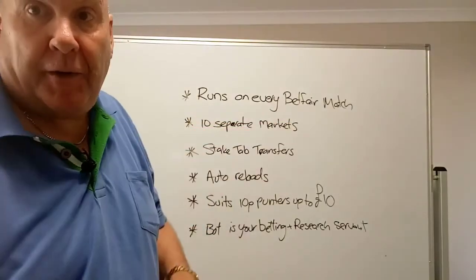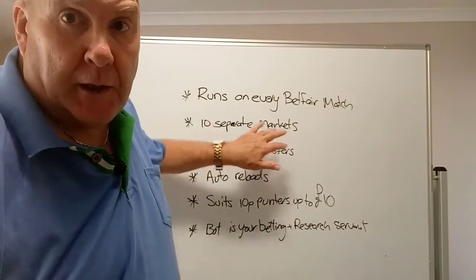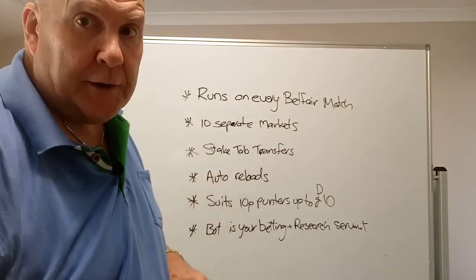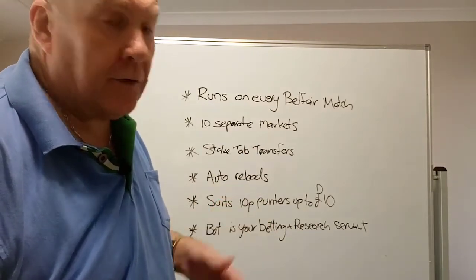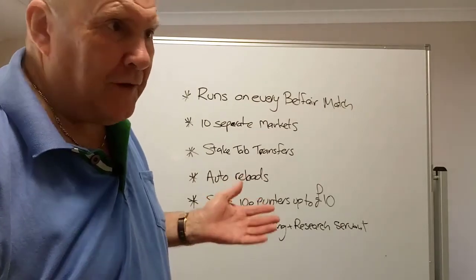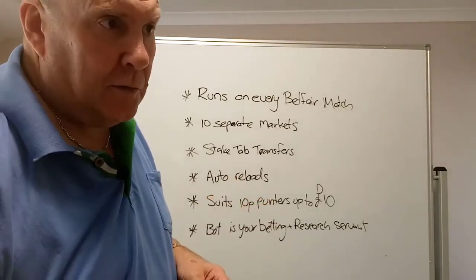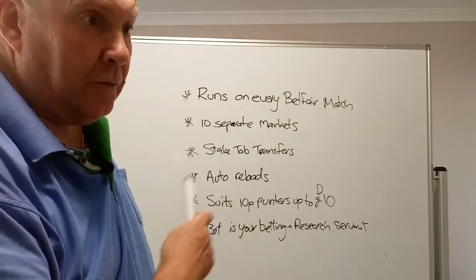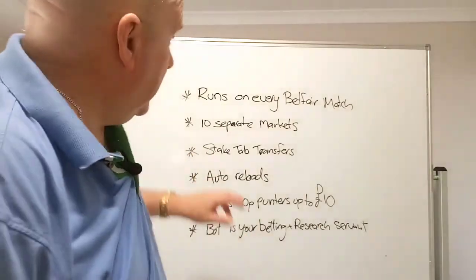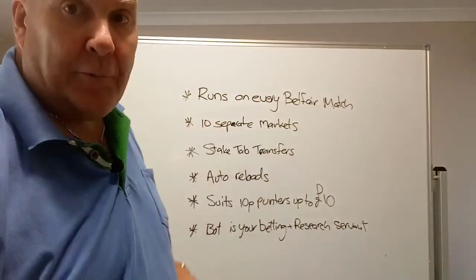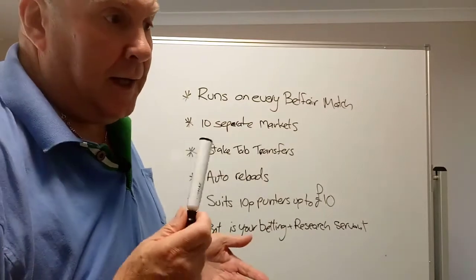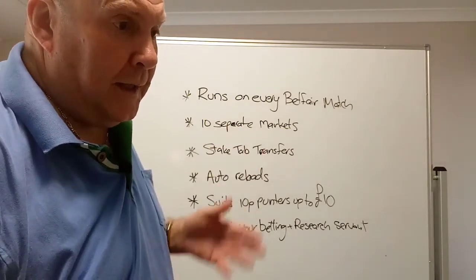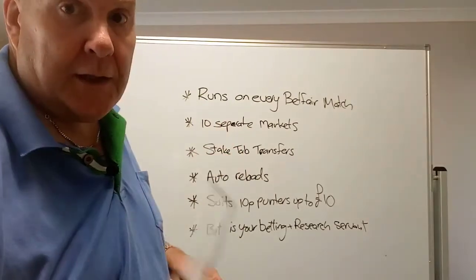The bot runs on every Betfair match, regardless of whether it's in South America, Asia, the USA — wherever Betfair has the markets, the bot can bet on it. It's basically a 24-hour-a-day game, though in practice it's about 16 to 18 hours, especially on weekends. There's a little lull when the time goes from South America across to Asia and there's not a lot being played. The bot will bet on 10 separate markets, from match odds all the way down to unders and overs, both teams to score, correct score — which is very popular — across nearly all matches.